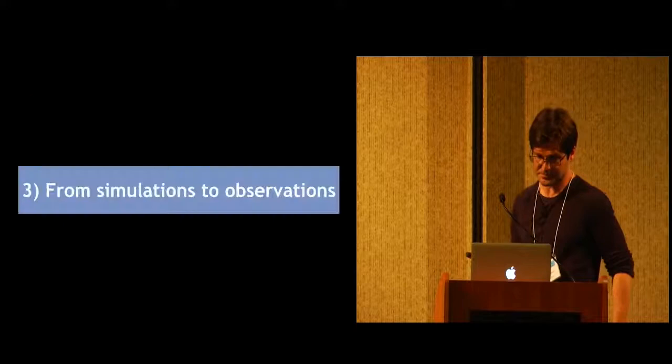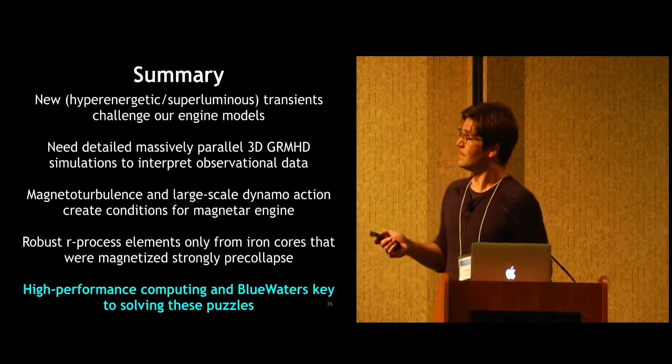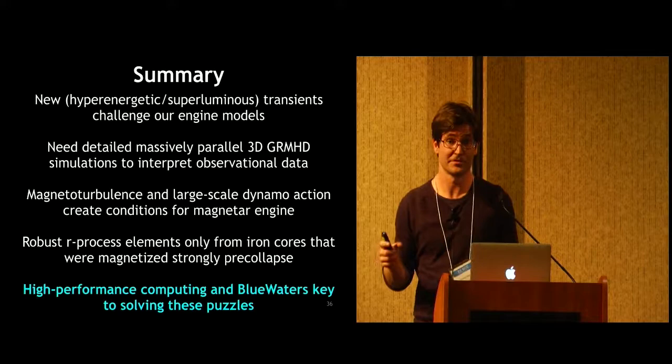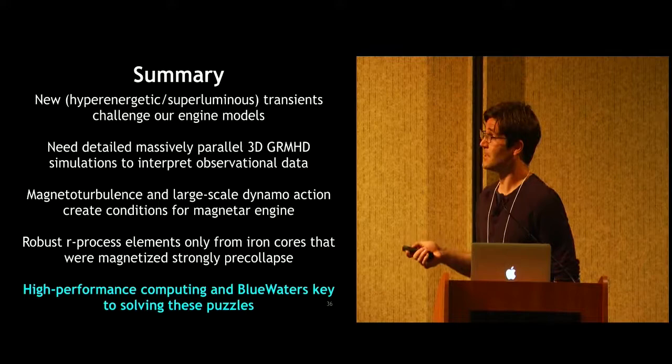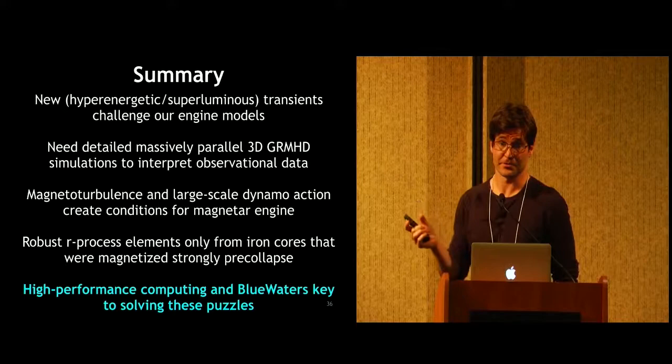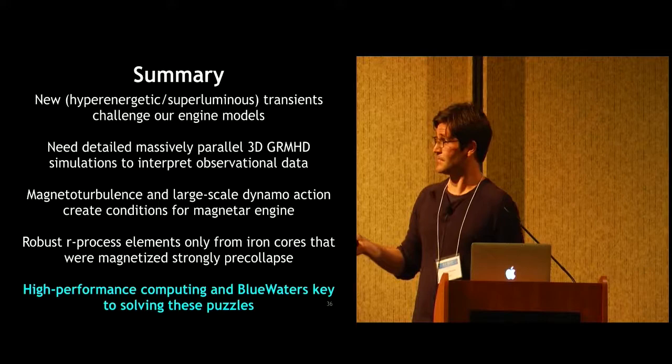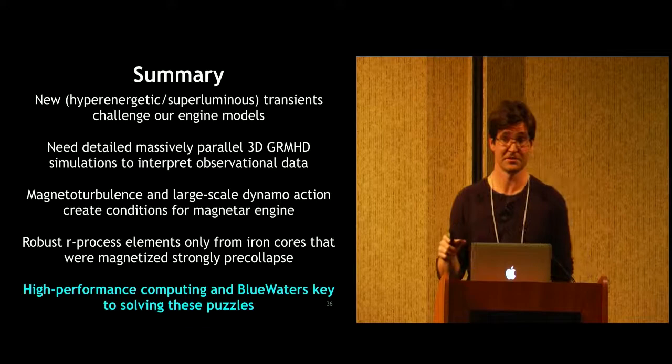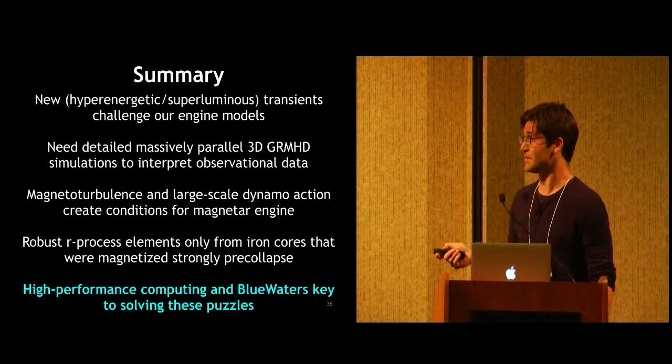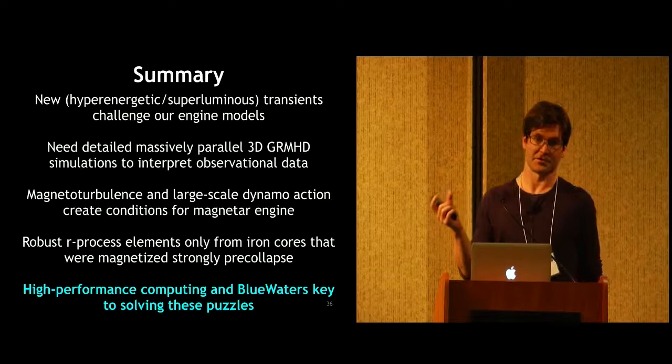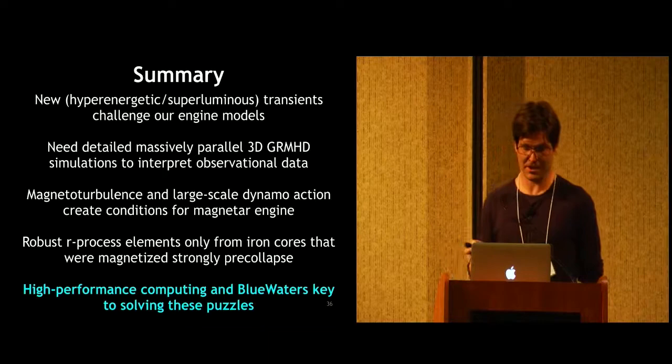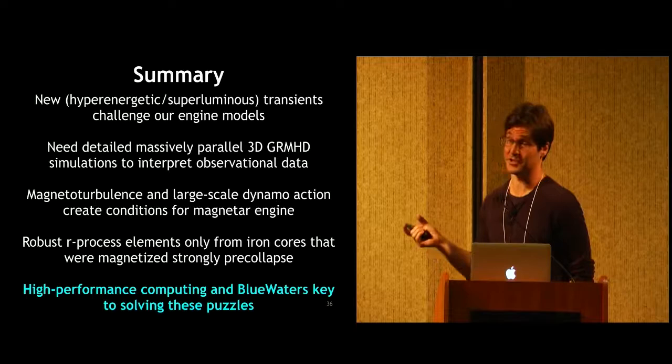So let me just summarize here. I've shown you that new transient events, hyper energetic and super luminous supernova specifically challenge the engine models that we have established for these. We need detailed, massively parallel 3D GRMHD simulations to interpret all the observational data that we have coming in right now. I've also shown you as one of the examples that magnetoturbulence and large-scale dynamo action in rapidly rotating core collapse can explain where the magnetic field amplification for jet formation comes from. And also that robust R process elements seems to only be achievable if we have strongly magnetized iron cores before collapse already. This is what I showed you in this last part. And really what is the underlying message at the end is high performance computing, especially Blue Waters level high performance computing is key to understanding all these puzzles. Thank you very much.